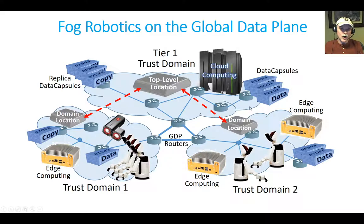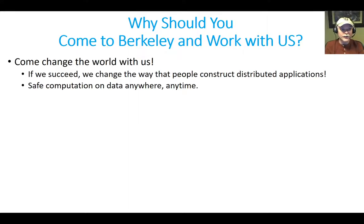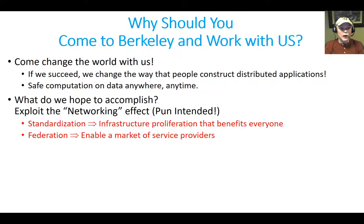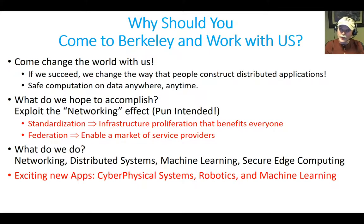We also have a project called Fog Robotics, which is explicitly looking at that model-building example — where models can be distributed in data capsules and used securely on the edge. So why should you come to Berkeley? Come change the world with us. If we succeed, we change the way that people construct distributed applications — safe computation on data, anywhere, anytime, but only if you want it to happen. We want to exploit the networking effect — pun intended — of standardization and federation to allow everybody to use secure information. We work in networking, distributed systems, machine learning, and secure edge computing. We're interested in a variety of new applications and we really hope you will consider coming to Berkeley. We're excited, and you should be too. Thank you very much.